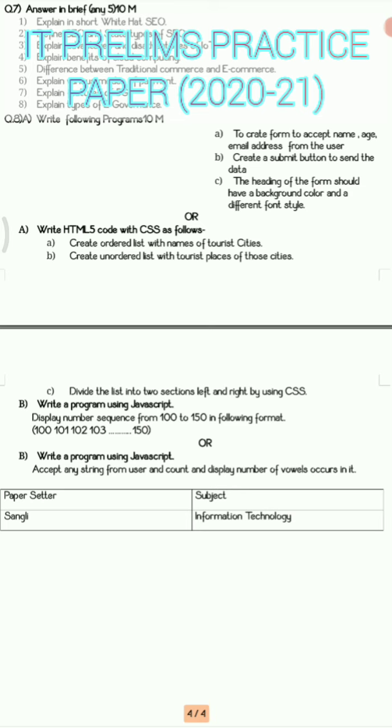Later on you have question number eight A section where you need to do programs. You will get the programs based on forms, CSS style sheets, ordered list, unordered list, derivative list. You have so many programs in your first chapter that is advanced web designing, so do practice all the programs properly. You can see one program carries ten marks.